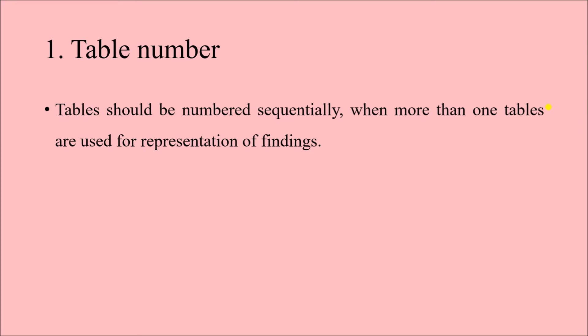First is the table number. When we conduct a study and present data in tabular form, we may have to prepare more than one table. So if we have more than one table, it is ideal to give a number to each table — tables should be numbered sequentially. When writing the results, we can refer to the table by its number, for example, 'according to Table 2, the finding was this.' So here we have written Table 1 followed by a dot.